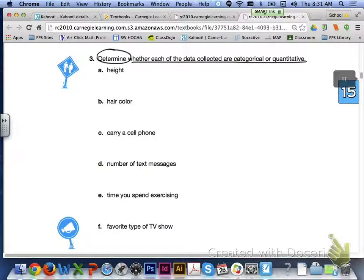Let's take a look at number three at the top of page 1005. And now that we have an understanding of the different types of data, we want to determine whether each of the data collected are an example of categorical or quantitative. So go ahead and answer letters A through F for number three.